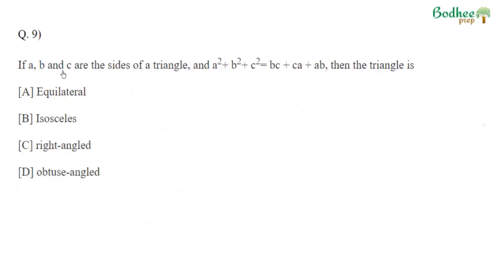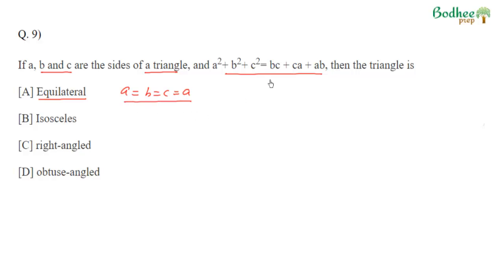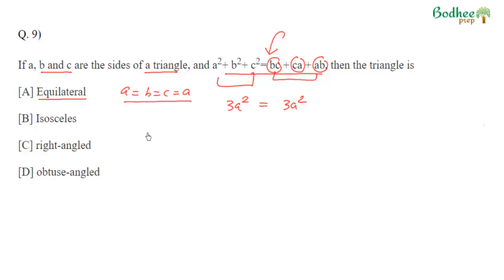The ninth question: given a relation involving sides A, B, C of a triangle, we must identify the type of triangle. For such questions, we test with an example. Assuming an equilateral triangle where A = B = C, the LHS becomes 3A², and the RHS also becomes 3A². Since LHS = RHS, the equation is satisfied. So option A — equilateral triangle — is correct.